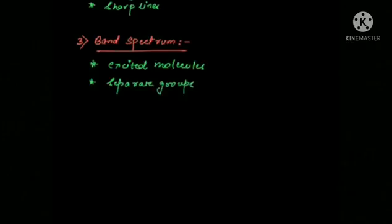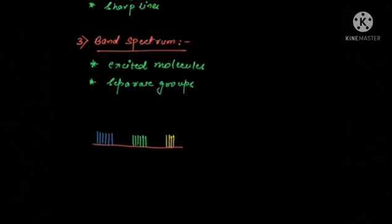These groups or bands are separated from each other. For example, a typical band spectrum might have a band of blue wavelengths, then separated from it a band of green, and further a band of yellow. Each such group is called a band. These are the three types of emission spectrum.